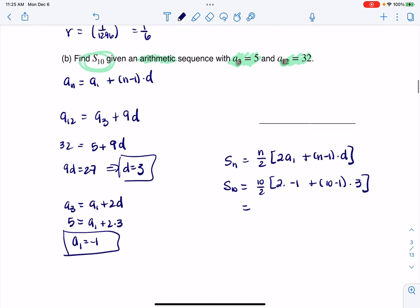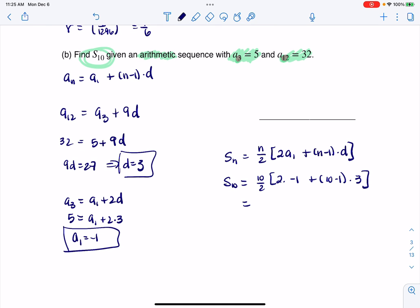And then it's a matter of just filling this in. So let's go see what we've got here. This is going to be five. We've got negative two plus nine times three. So negative two plus 27 is 25. So I have five times 25, which would give me 125. And there's my answer.